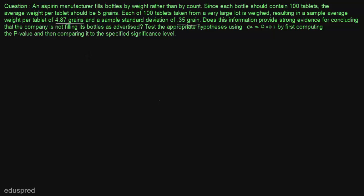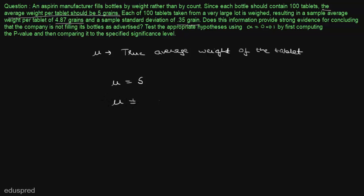First of all, let's say that mu is the true average weight of the tablet. So mu is a population parameter and it is the true average weight of the tablet. Our first step is to write the null and alternate hypothesis. We are given that the average weight per tablet should be 5 grains, so mu should be equal to 5. This is one claim made in the question. The counter claim is mu not equal to 5. Since this claim has the equal to sign, this is our null hypothesis, and consequently, this is our alternate hypothesis.